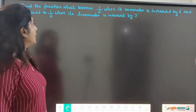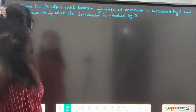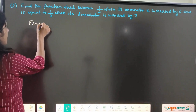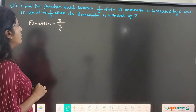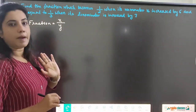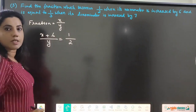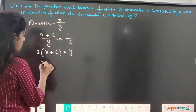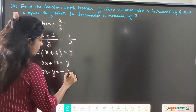Next question: find the fraction which becomes 1/2 when its numerator is increased by 6, and equals 1/3 when its denominator is increased by 7. Let the numerator be x and denominator be y, so the fraction is x/y. First condition: only the numerator is increased by 6, denominator stays the same, and the fraction becomes 1/2. Cross multiplying: 2(x+6) = y, giving 2x + 12 = y, or 2x − y = −12 (equation 1).